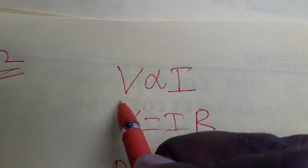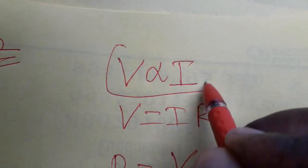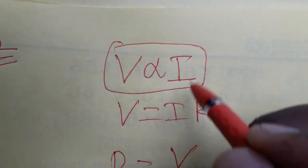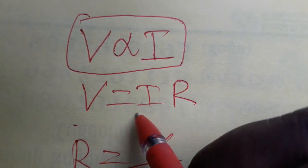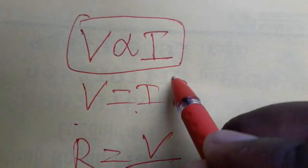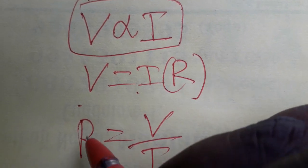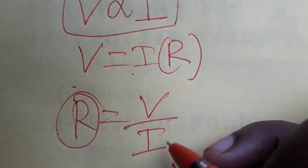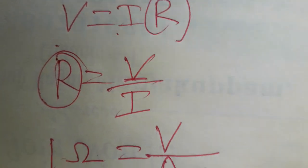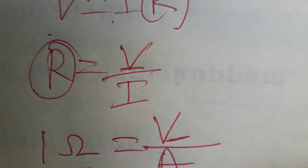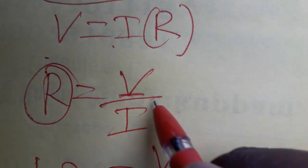Hello students, today we are going to learn what is 1 Ohm. According to Ohm's Law, V is directly proportional to I. V is equal to a constant times I, where the constant is R. So R is equal to V divided by I. The SI unit of R is Ohms, and the SI unit of V is Volt.